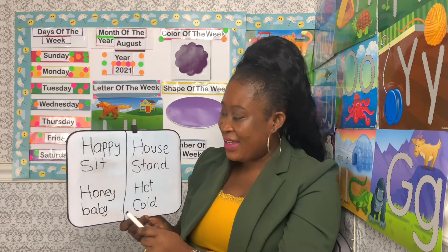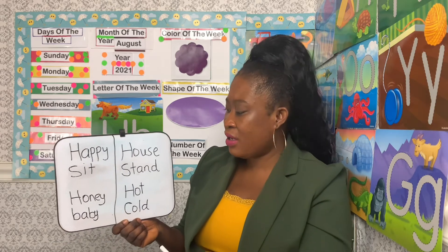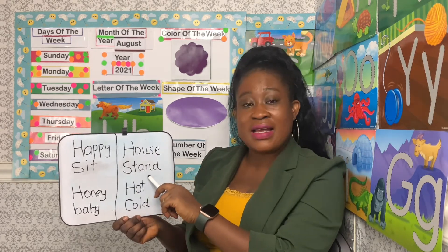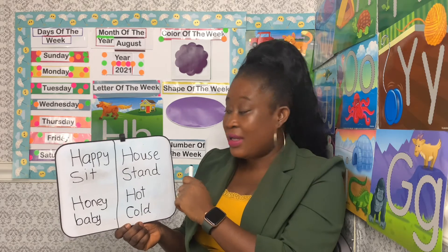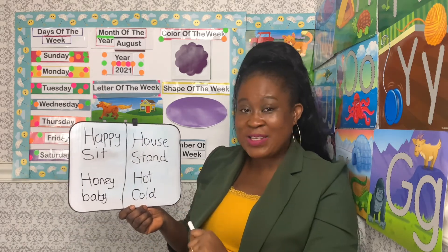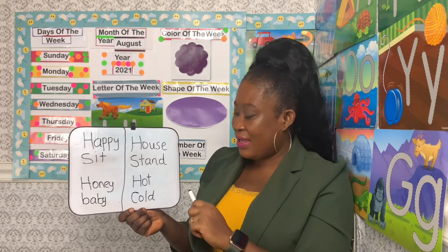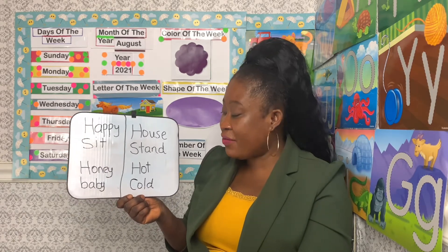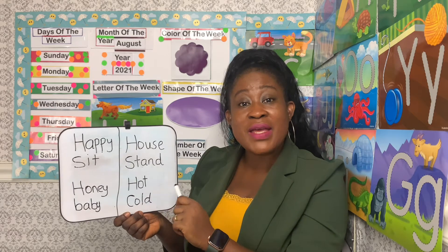Let's keep playing. I spy with my little eye a word that begins with H — and we have house and stand. Which of these begins with H? House! Last one. I spy with my little eye a word that begins with H — and we have hat and cold. Which of these begins with H?